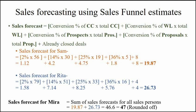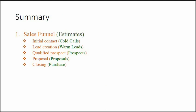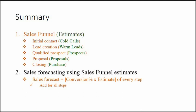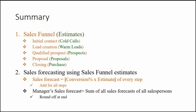Let us review what we have learned in this video. We reviewed the steps of the sales funnel and estimates of each step: the number of cold calls, warm leads, prospects, proposals, and final purchases. These estimates are used for forecasting sales by multiplying the conversion rate with the value of the estimate at each step and adding all products. The manager's sales forecast is arrived at by adding the sales forecasts of all salespersons and then rounding off at the end.